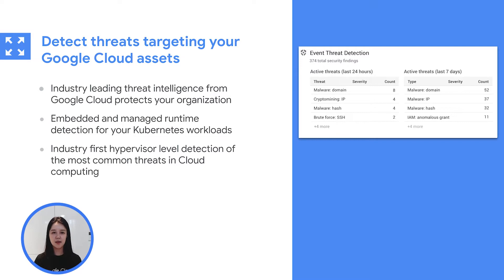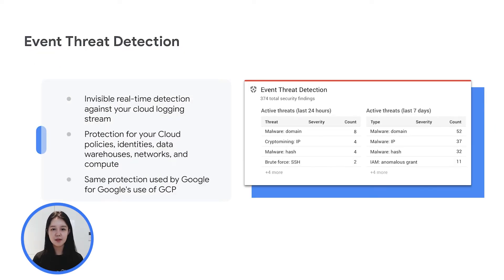Lastly, with SCC, you detect threats targeting your Google Cloud assets. In the cloud, the threat landscape looks a little bit different than it does on-prem. There are some things you may recognize, such as malware, phishing, and use of resources to commit outgoing DDoS. But some of these are more prevalent and more powerful in the cloud. With Event Threat Detection, which is an externalized version of the internal logs processing pipeline that Google uses to protect itself, it watches the cloud logging stream to detect threats like brute force SSH, cloud IAM abuse, malware, and data infiltration.